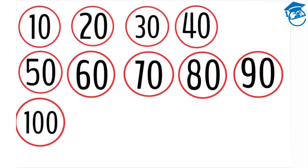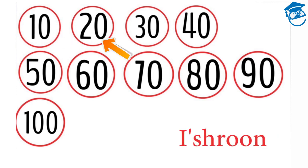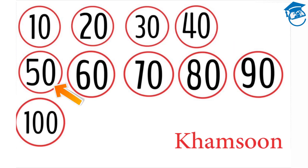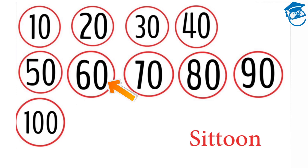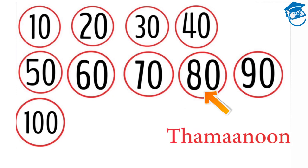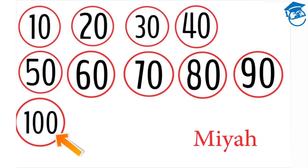Let's begin with a short review. In Part 1, we learned how to count from 10 to 100 by 10s: Ashura, Ishrun. In Part 2, we'll learn how to count in between each of these numbers. So let's begin.